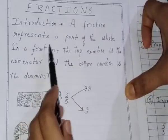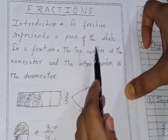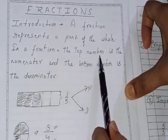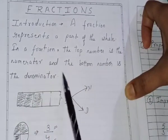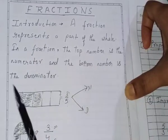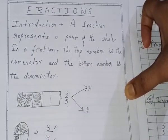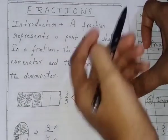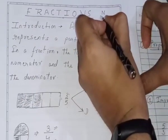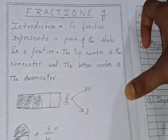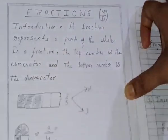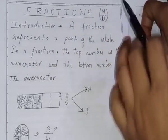Fractions represent a part of the whole. In a fraction, the top number is the numerator and the bottom number is the denominator. It consists of two numbers — numerator and denominator. Its form is numerator upon denominator, so a fraction is written in the form of numerator upon denominator.